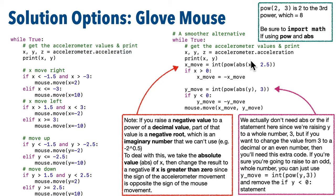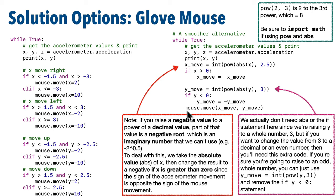But this code takes care of that problem. We first make sure any value we raise is positive by using the absolute value — we get abs() when we import math. Then we make sure we set the sign properly: a negative x accelerometer value should give a positive mouse x value and vice versa, while a negative y accelerometer value should also give a negative y mouse value. Then we move x and y together. It's much smoother, and as an extra bonus we learned about the math library and have less code.